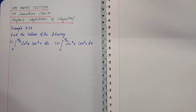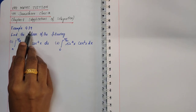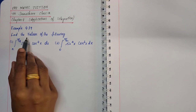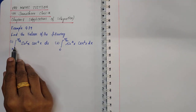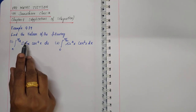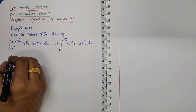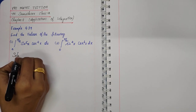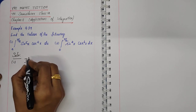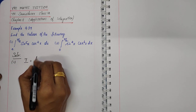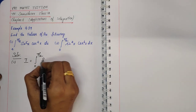Chapter 9, Applications of Integration, Example 9.39. The question is to find the values of the following two divisions. Division number 1: integral from 0 to π/2 of sin⁵x·cos⁴x dx. Solution: take the given integral as I, equal to integral from 0 to π/2 of sin⁵x·cos⁴x dx.